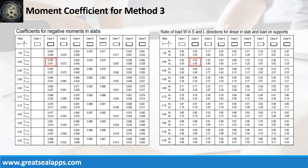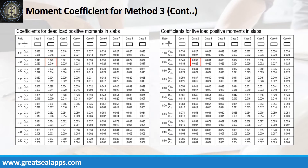Use Case 2 at m equals 0.95 to refer coefficients for negative moments and shear computations. Use Case 2 at m equals 0.95 to refer coefficients for dead load and live load positive moments.